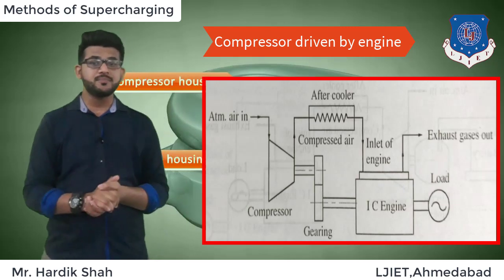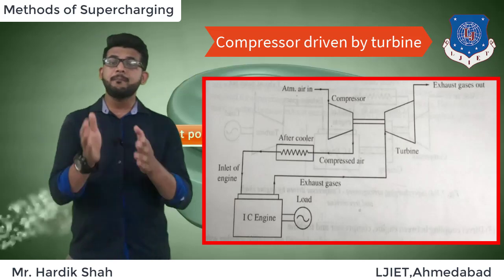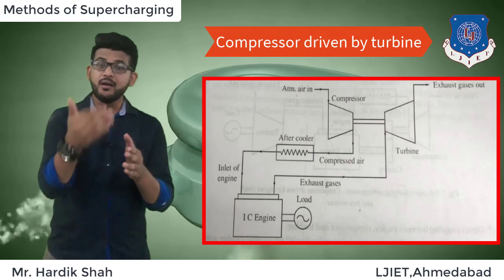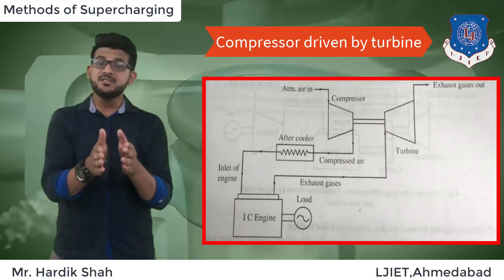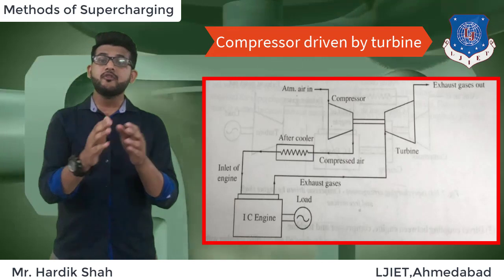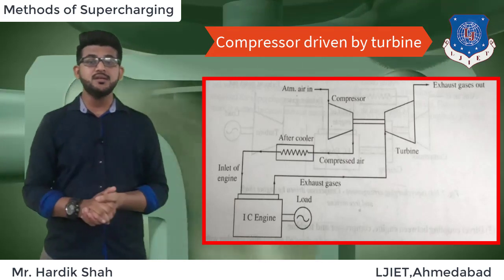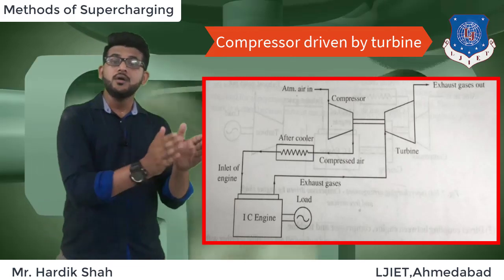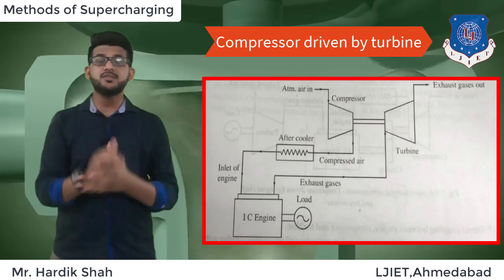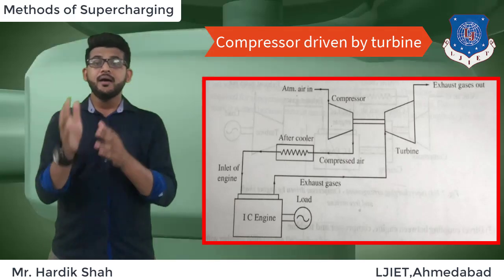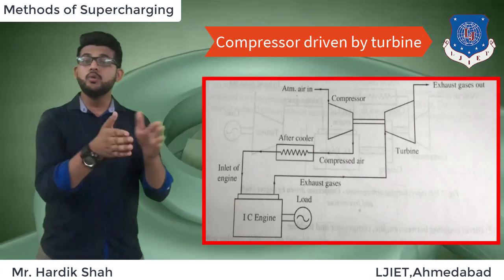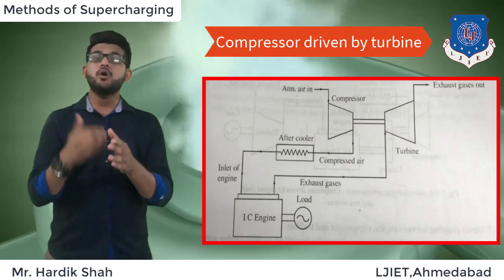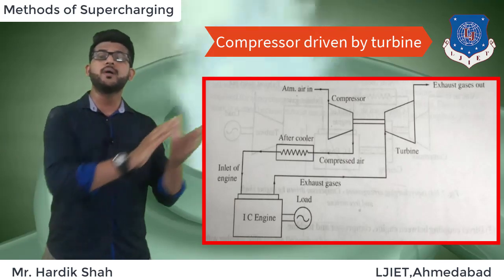The second method is a compressor driven by a turbine. In this arrangement, the compressor is driven by a turbine which runs with the help of exhaust gas coming from the engine exhaust, as shown in the figure. The engine output is not fully utilized to drive the compressor; instead, the exhaust energy of the engine is used to drive the turbine, which is coupled with the compressor. There is no mechanical connection between the engine and the supercharger. This arrangement is also called a turbocharged supercharger.